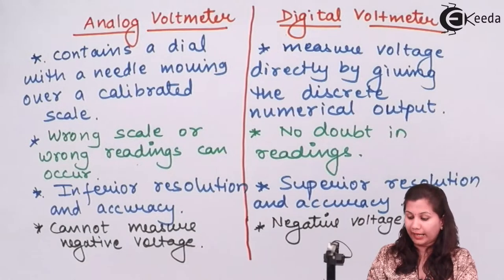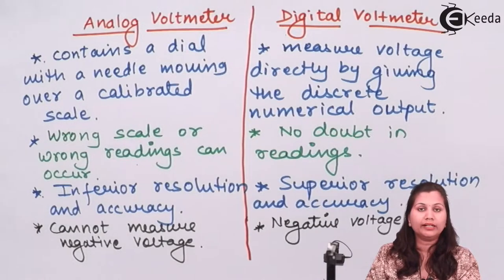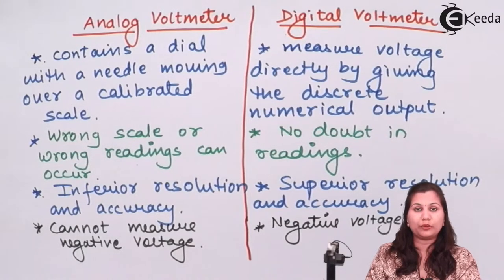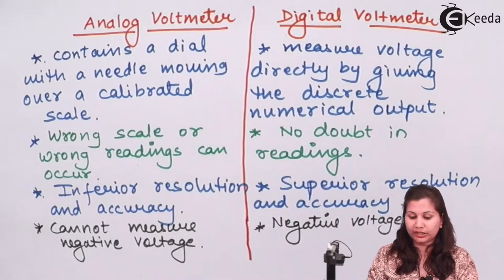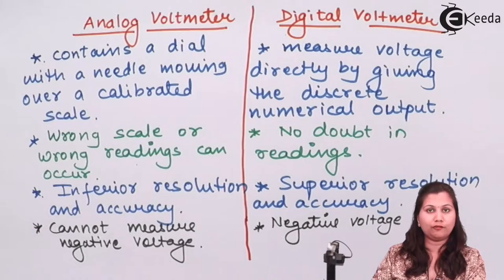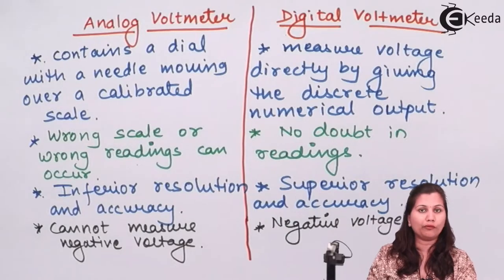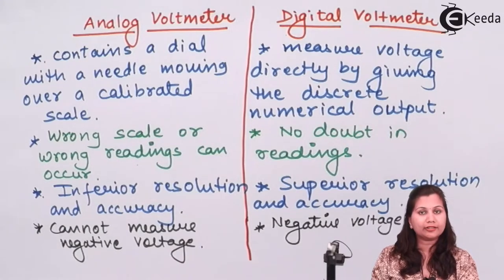Another difference is that in the digital voltmeter, no damage will occur if the instrument falls from the table. But in the analog voltmeter, if the device falls, it will be damaged — the scale will be disturbed and the glass over it will be broken. So with the analog voltmeter, we cannot roughly use the instrument, whereas digital voltmeters can be roughly used by the observer.